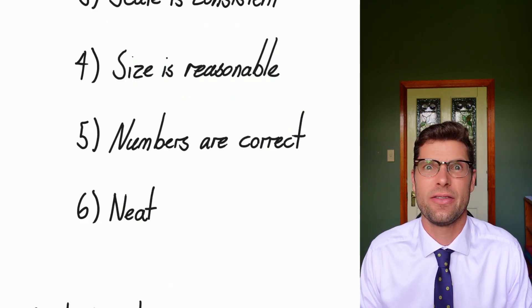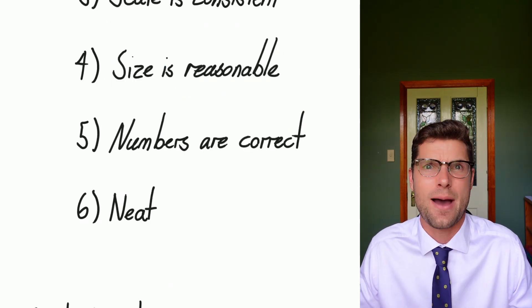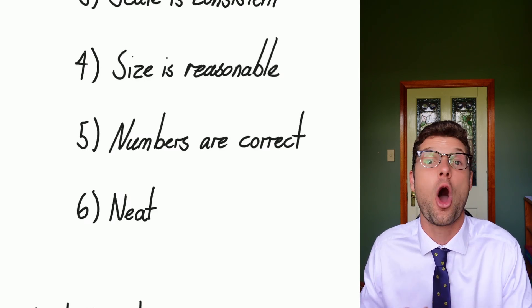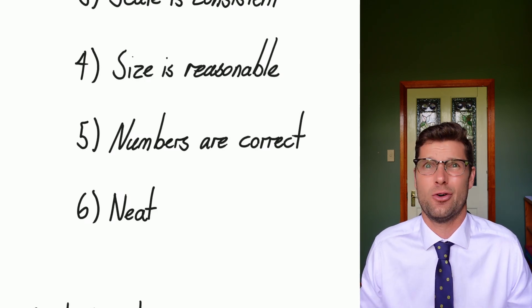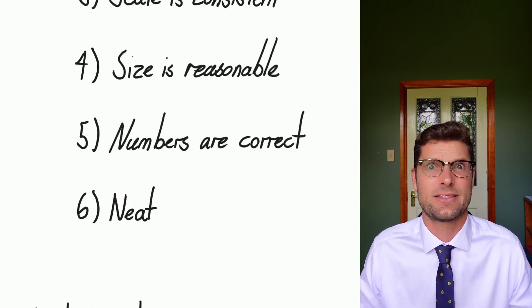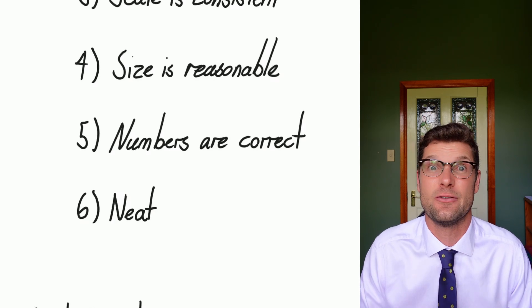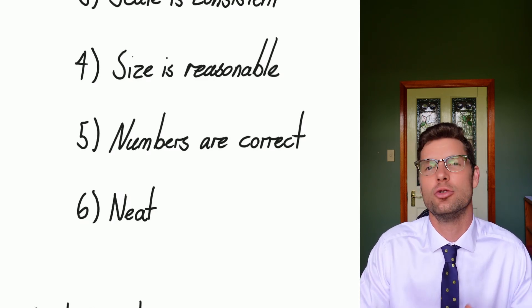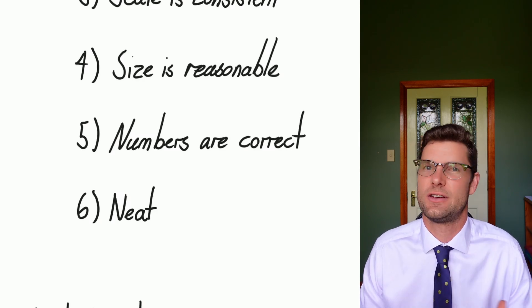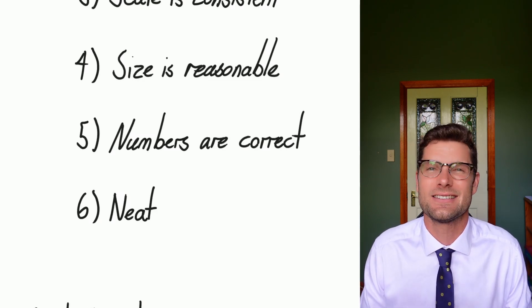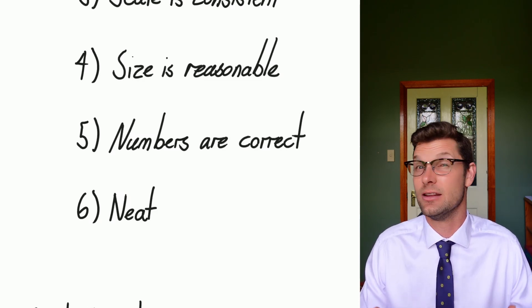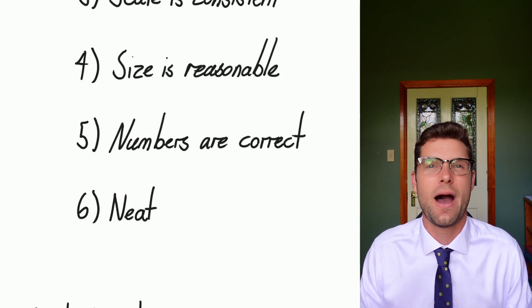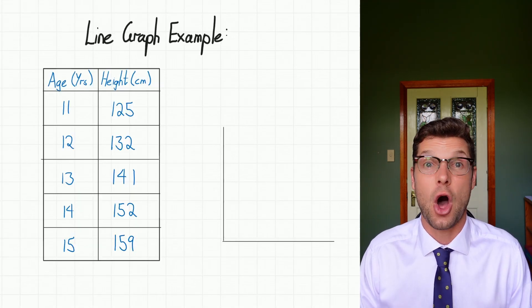Number five is the actual one that matters: did you get the numbers correct? That's the only maths part about this — the only mark you get for doing the maths correctly. The last one, number six, is that it's neat. You've used a ruler, you've joined up the dots of your line graph in a way that makes sense. Just taking a little bit of time and a little bit of pride when you're doing it will get you a mark 100%.